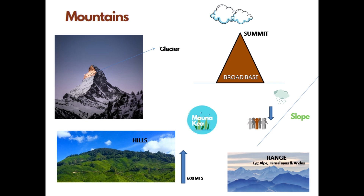Mountains that are connected and continuous are called mountain ranges. The world's famous mountain ranges are the Alps, Himalayas, and Andes. Human settlements are often less in mountains because agricultural and construction possibilities are limited due to sloped land, and heavy rainfall causes landslides. There is another physical feature called a hill — they look similar to mountains, but their elevation is often lesser than 600 meters. Elevations above 600 meters are called mountains, so please don't get confused between these two.